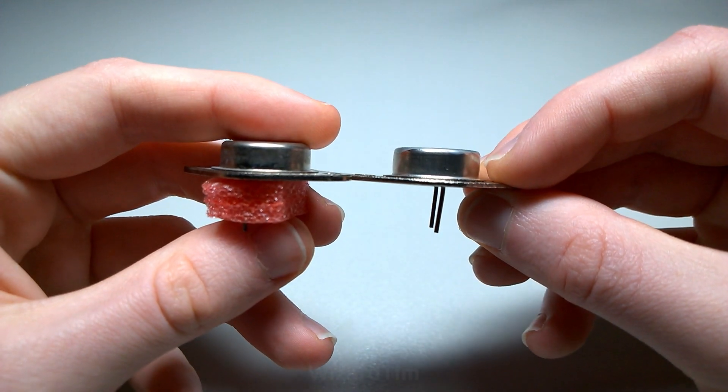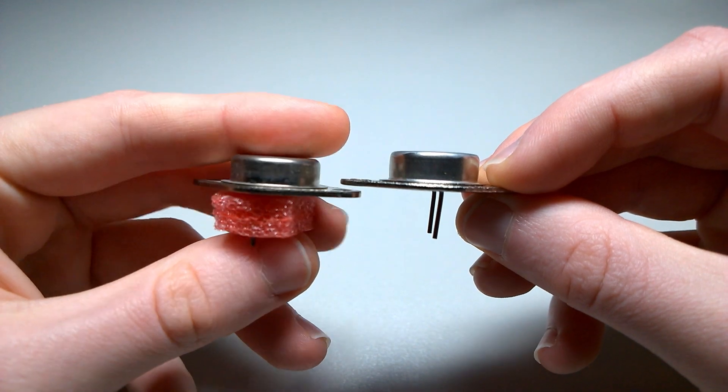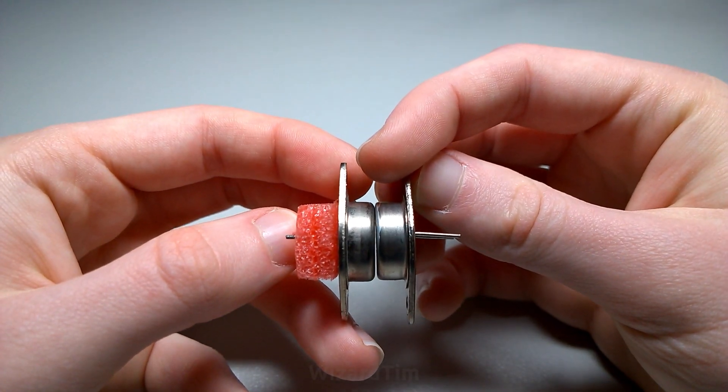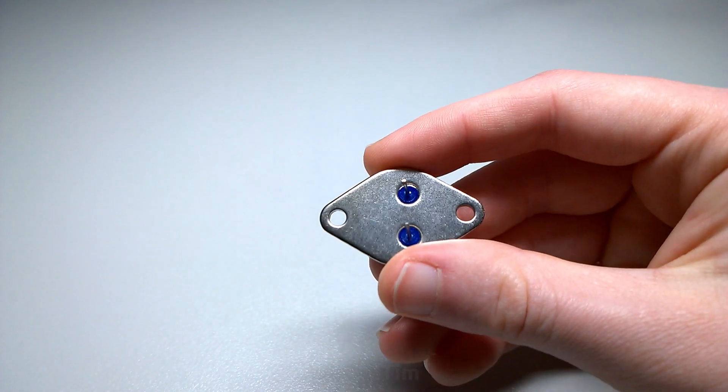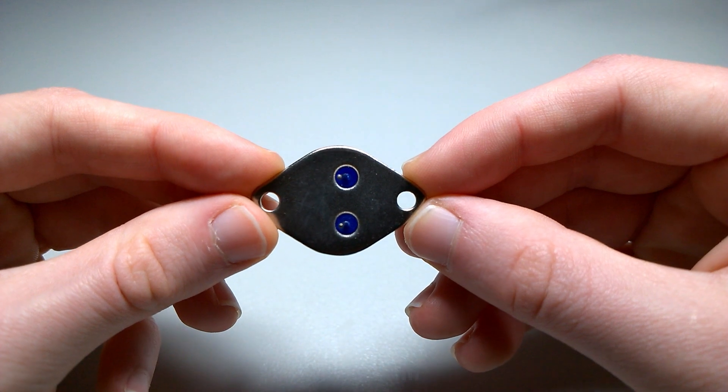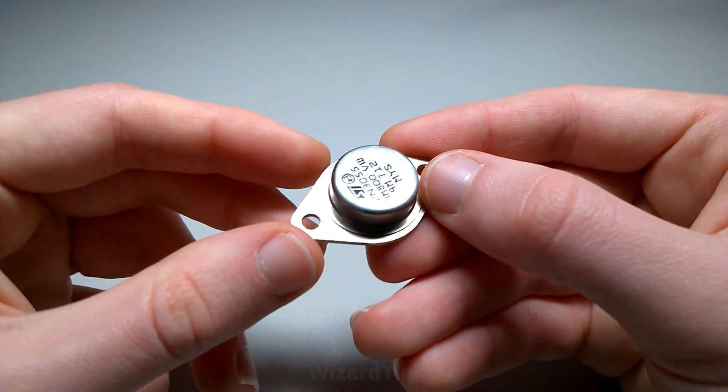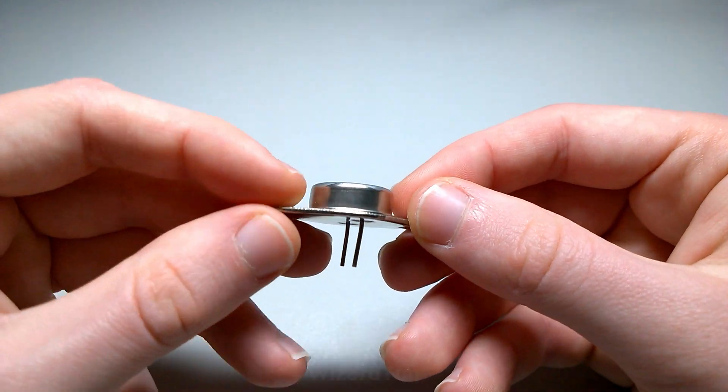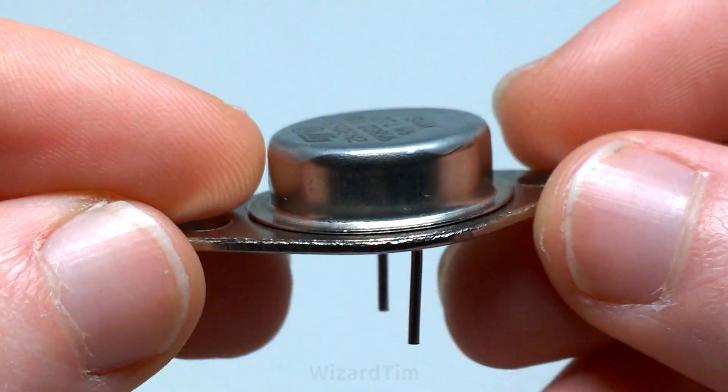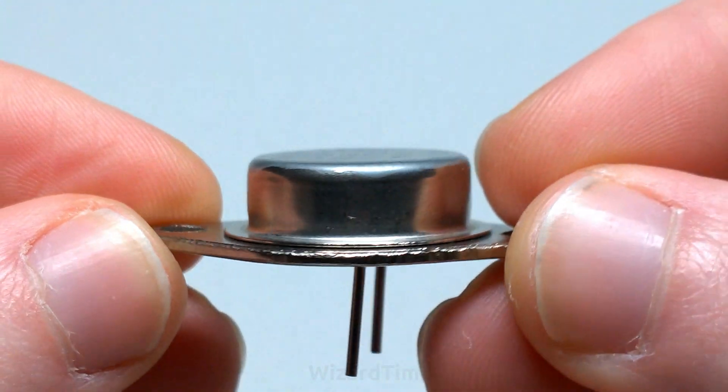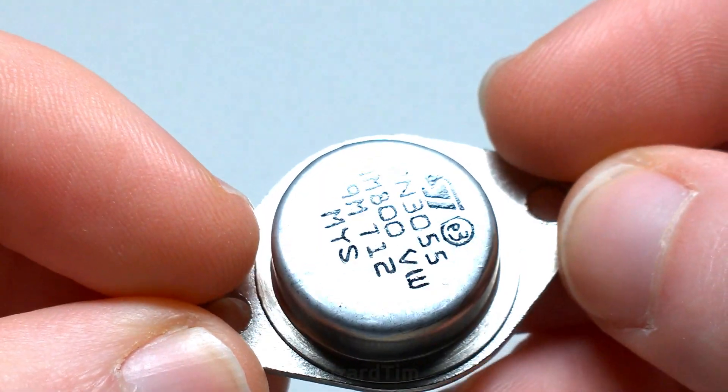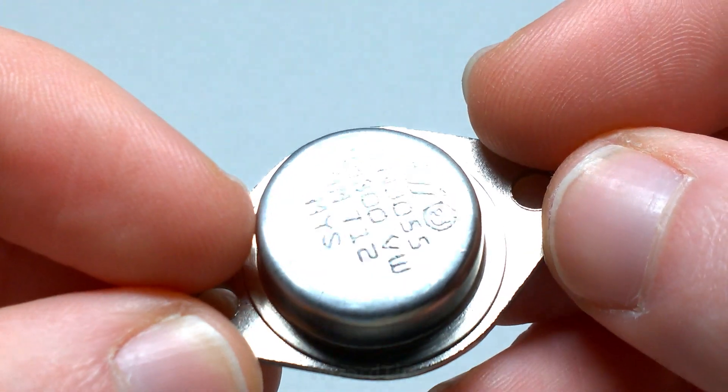Although, interestingly, comparing it to the genuine HP part, we can see that the thickness of the metal and the size and shape of the can is actually correct, so maybe there is a chance for this one. Although, if you've been paying especially close attention, you may have noticed there's something a little bit off about the top. It almost looks like someone has painted over the previous marking and put a new one on. Yeah, that's very confidence-inspiring.